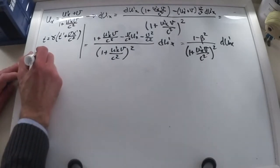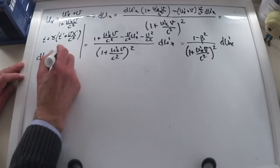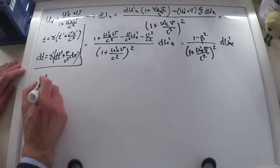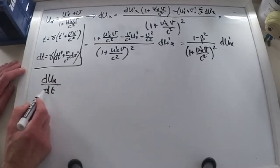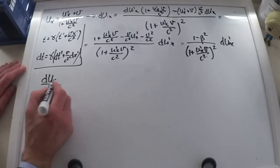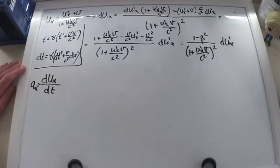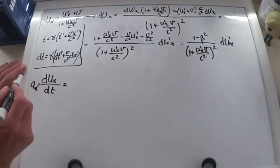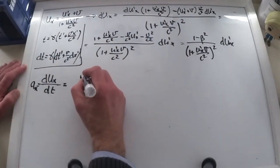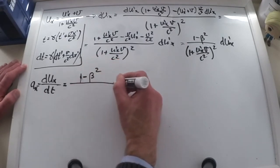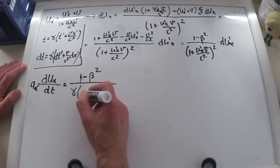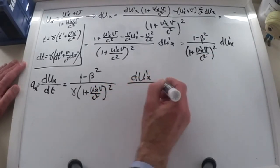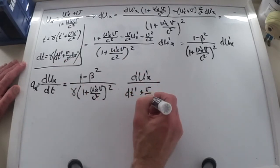Now the differential of time: dt is equal to gamma times dt prime plus v over c squared dx prime. So now what I'm going to do is take this differential of velocity with respect to time — this is in the rest reference frame, so this is on the station — and we will call it a sub x, the acceleration as measured from the station. Now let's have a look at what happens from the train, so all of this divided by dt: it's going to be 1 minus beta squared divided by gamma times this parenthesis, gamma times 1 plus u prime x v over c squared everything squared, and then I have du prime x over dt prime plus v over c squared dx prime.